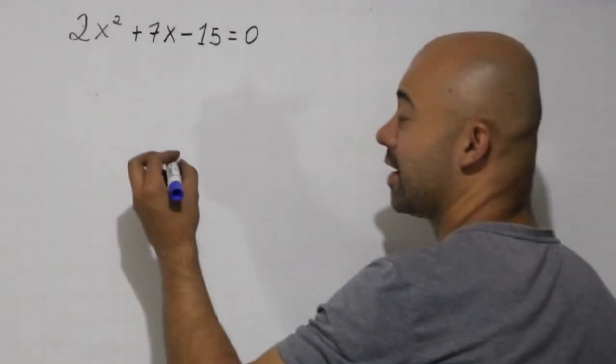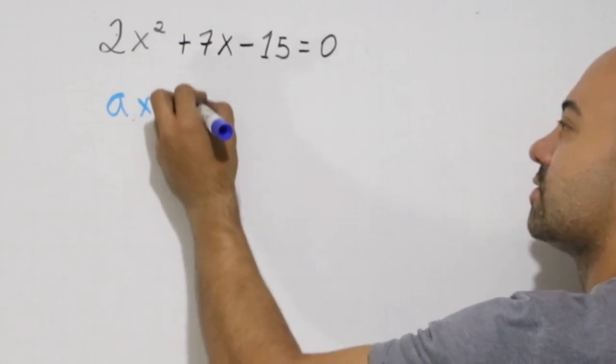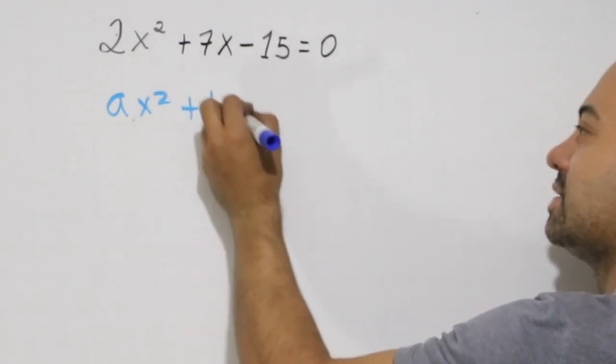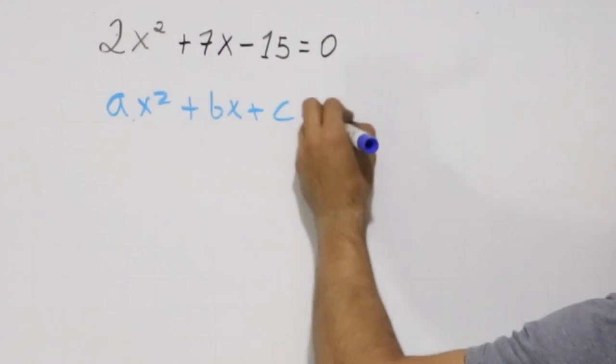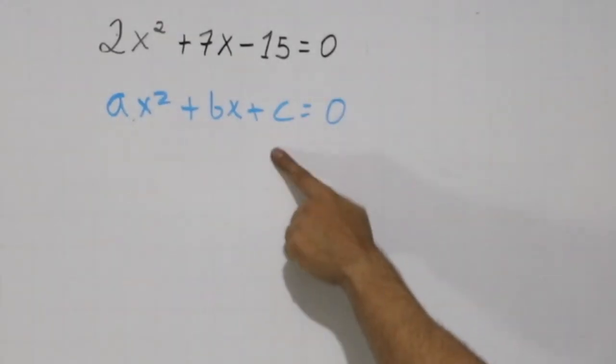Now the equation is in the right order already. Remember, you need an equation that is written this way: ax squared plus bx plus the constant term c. You need a zero on the right side of the equation in order to use the quadratic formula.